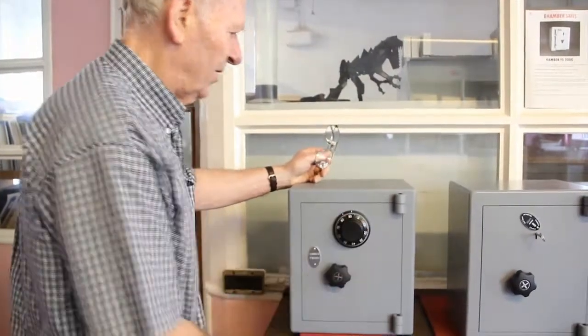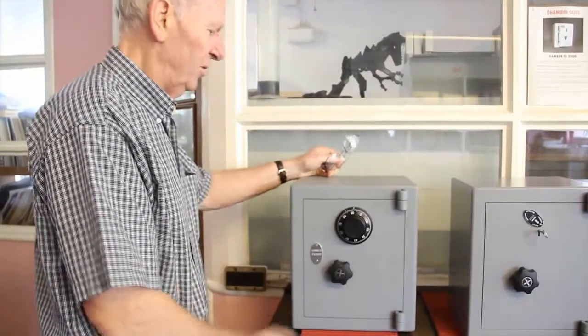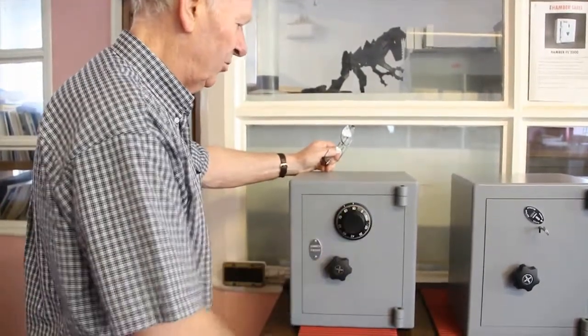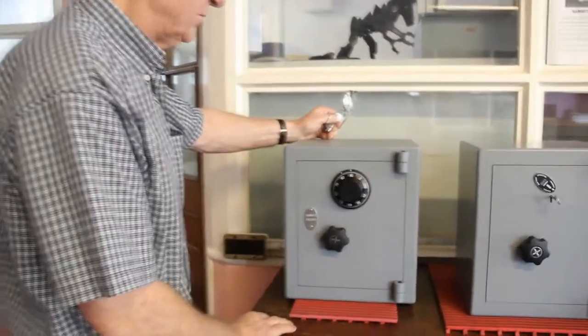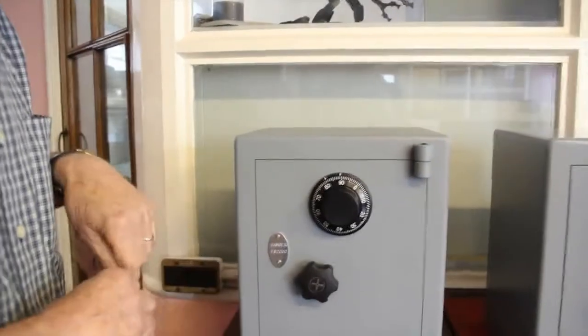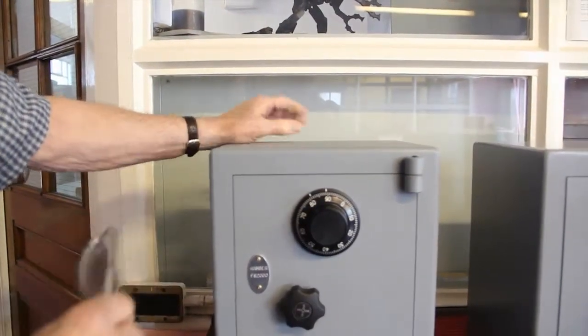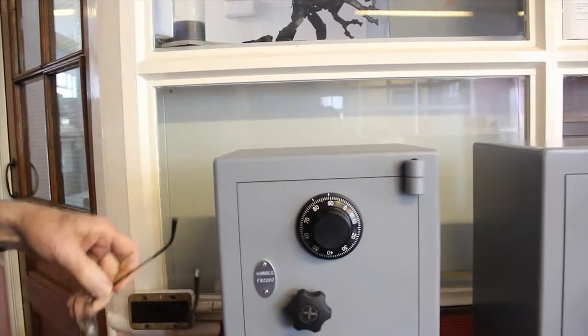When you set a manual combination lock and lock it, all the wheels inside are all scrambled up. And to open it in one of its one million different changes of code, so it's got a code there and it's a choice from one million.